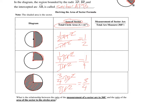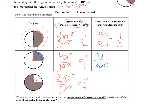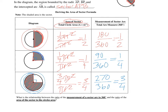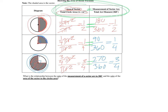This is very similar to the previous lesson on arc length, except now we're talking about area of a sector. Notice the pattern: the arc measure for the half-circle is 180 over 360, giving one-half. For the quarter circle it's 90 over 360, giving one-fourth. For three-quarters it's 270 over 360, giving three-fourths.